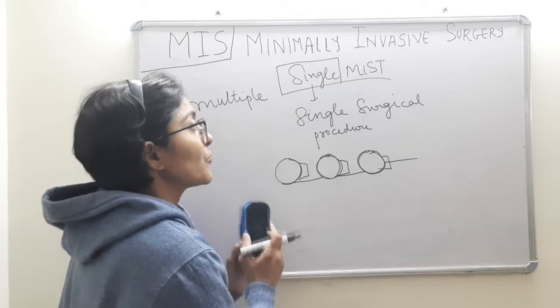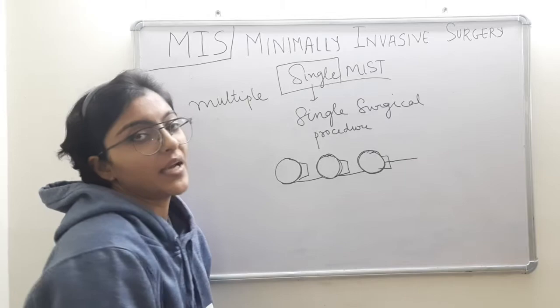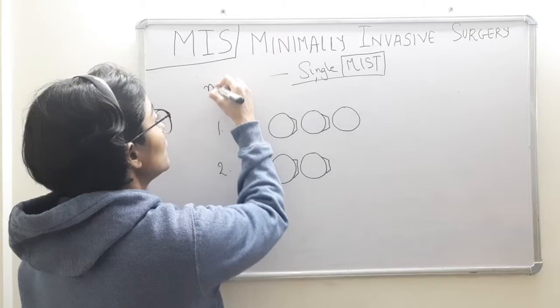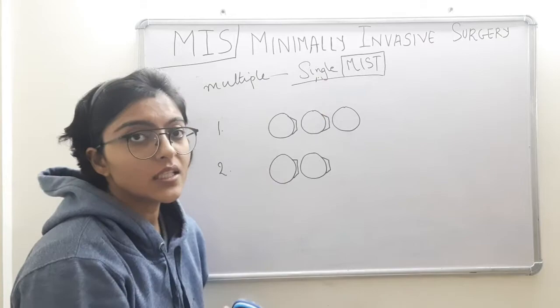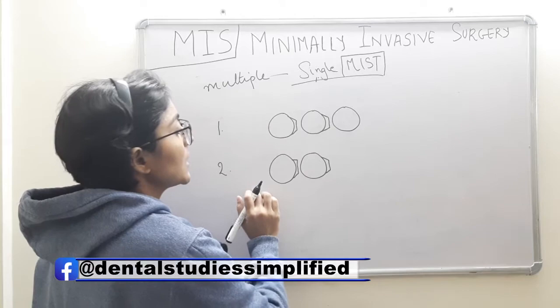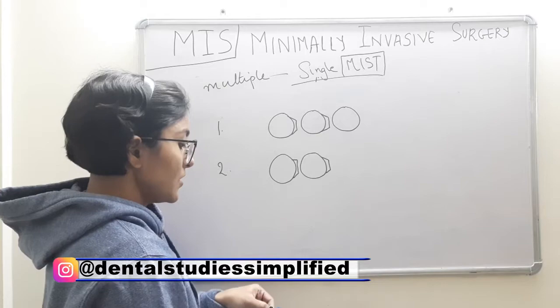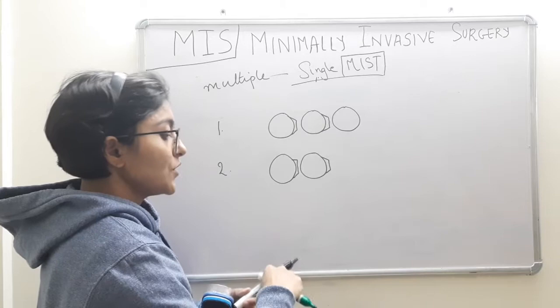Now we will proceed to discuss the main technique for today's video: Single MIST. In Single MIST, we are trying to treat multiple defects in a single procedure — a single surgical procedure. We have two case scenarios. The second case scenario is wherein we have a distal tooth, and here our incisions will go as follows.